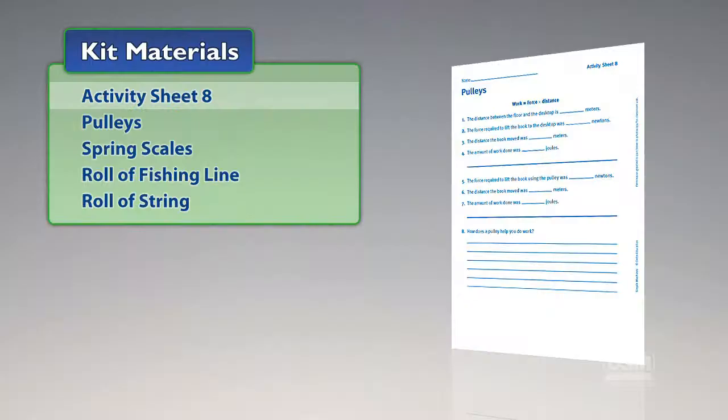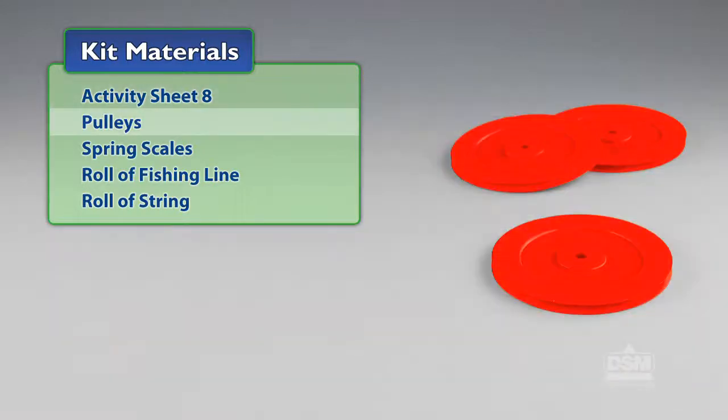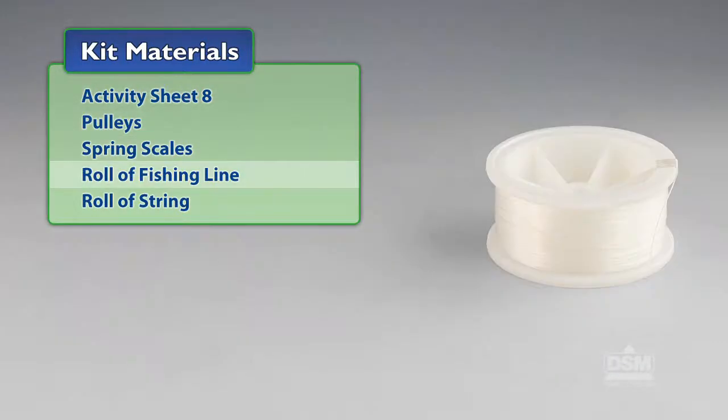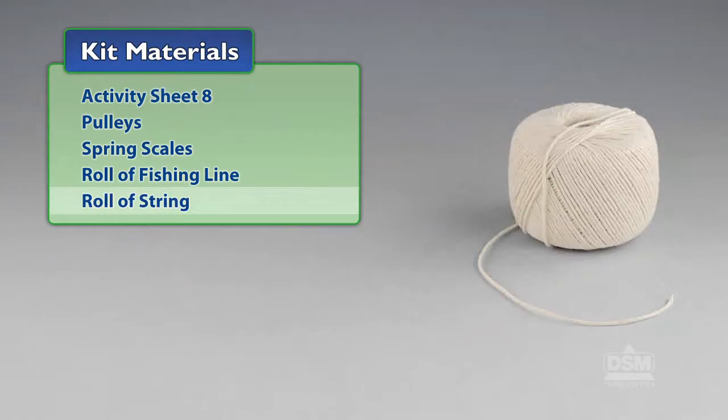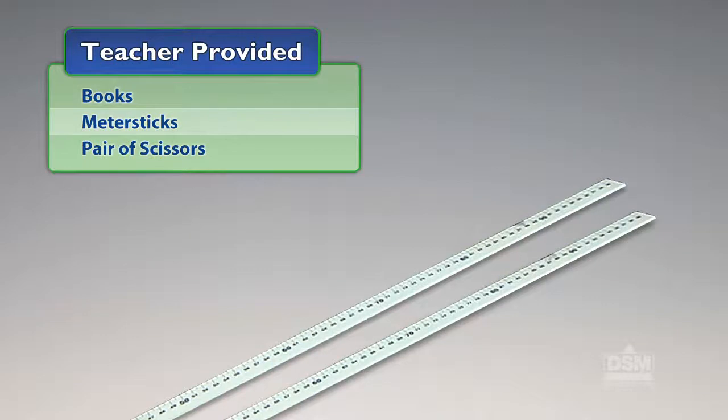You will need the following materials from the kit: Activity Sheet 8, Pulleys, Spring Scales, Roll of Fishing Line, and a Roll of String. You will also need to provide books, meter sticks, and a pair of scissors.